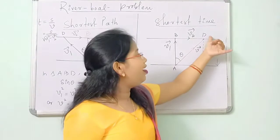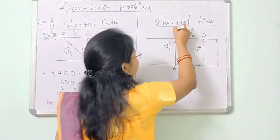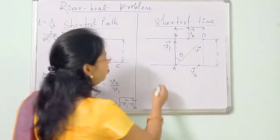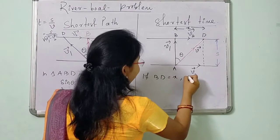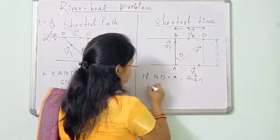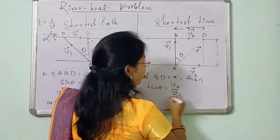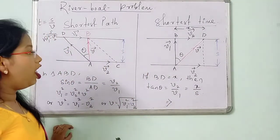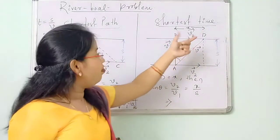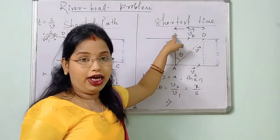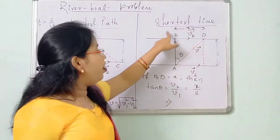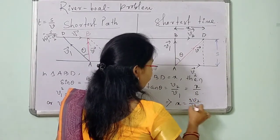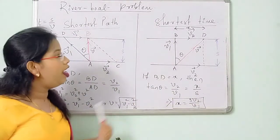As a result of both these vectors, the boat reaches point D instead of point B. If BD equals X, then tan theta equals V2 by V1, which also equals X by S. So if a question asks for the distance X — how far from B the boat lands at D — then X equals S times V2 divided by V1. So this is your river boat problem.